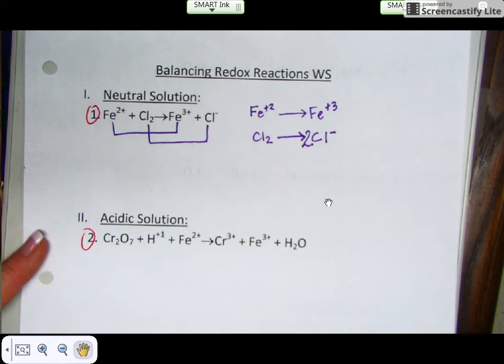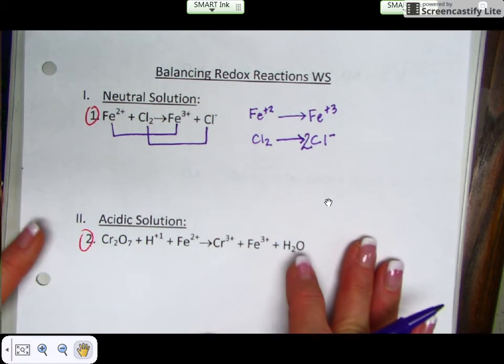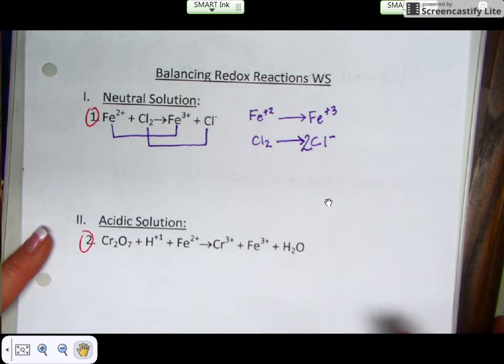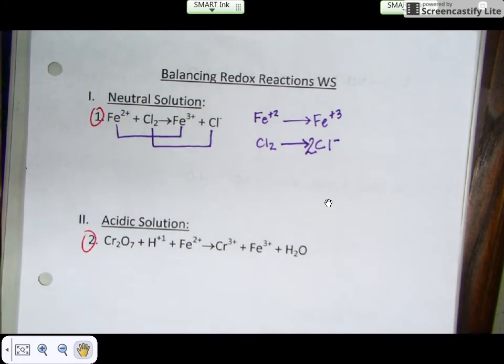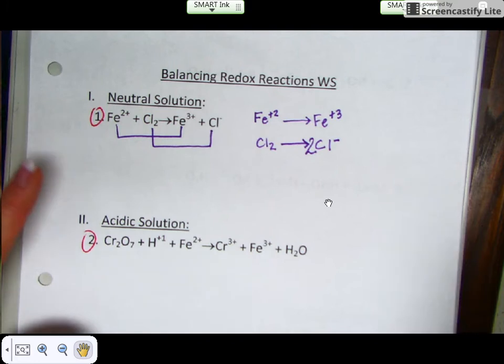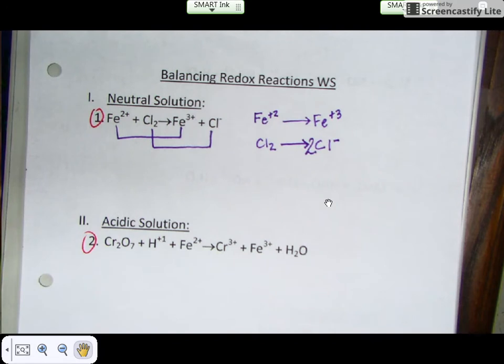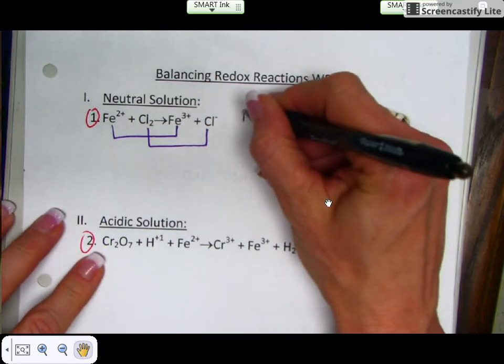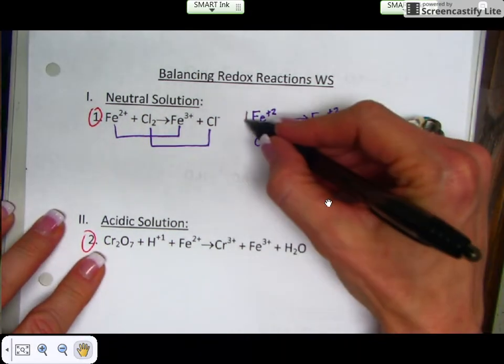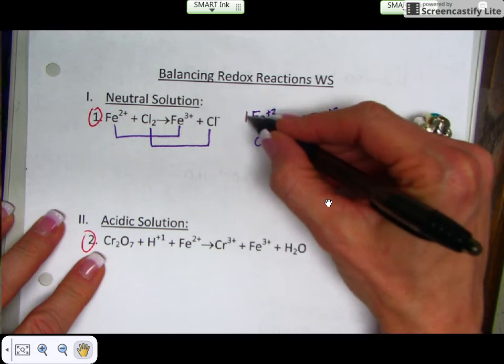The next step says balance your charge using electrons. This is the part that is really different than what we normally do. We're going to be adding electrons to balance our charge. And here, this is also the place where oftentimes students will mess up. So here's how you figure out your charge. You're going to take a look at your coefficient and then multiply the coefficient to any charge you see.